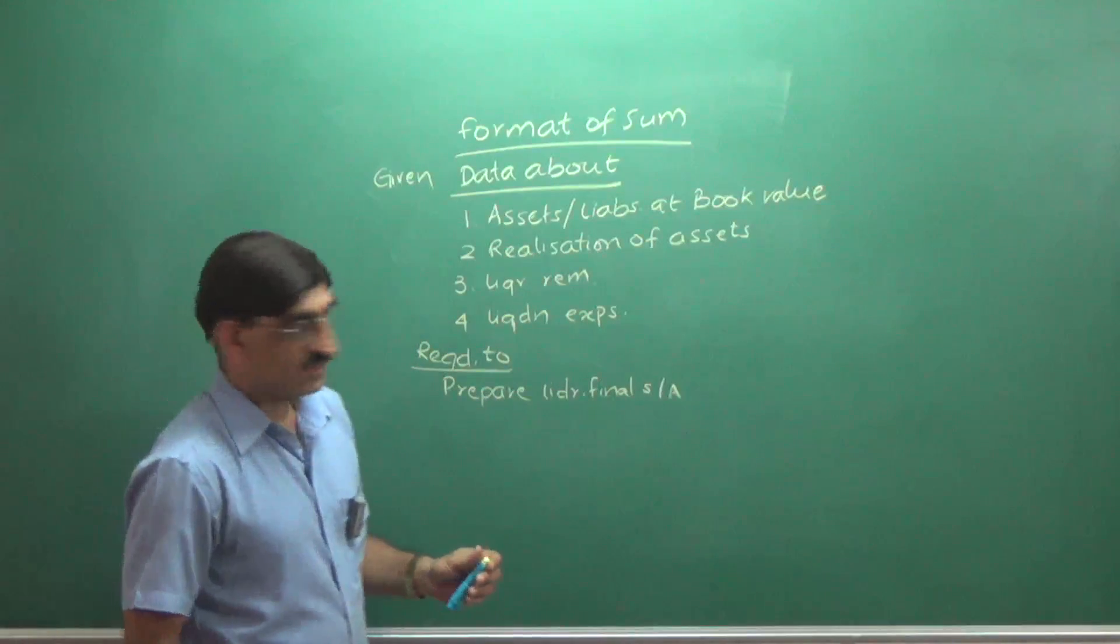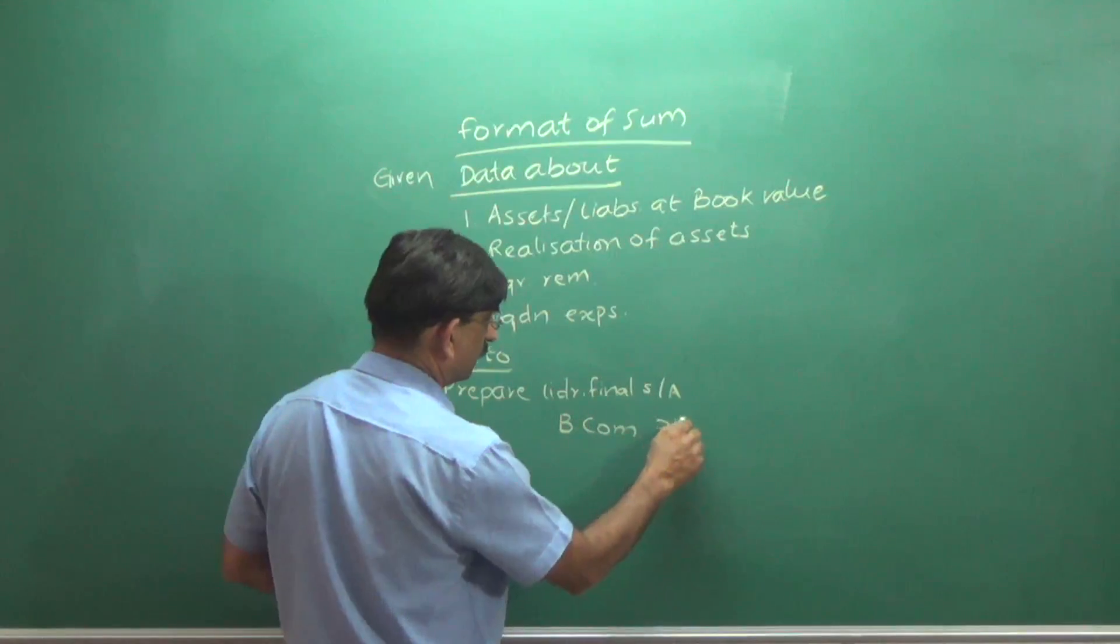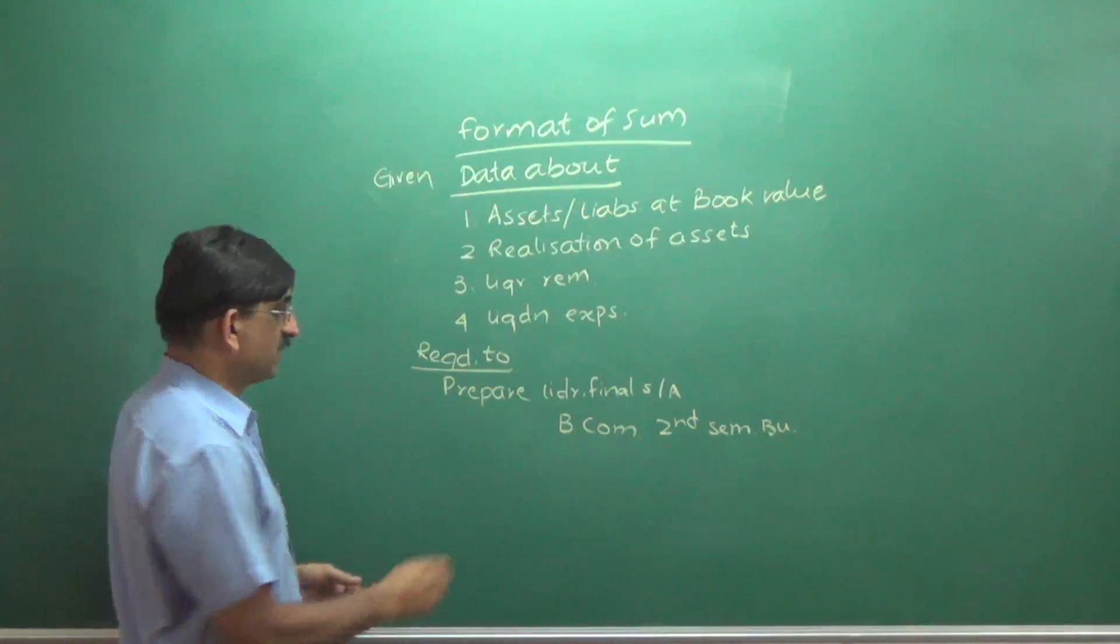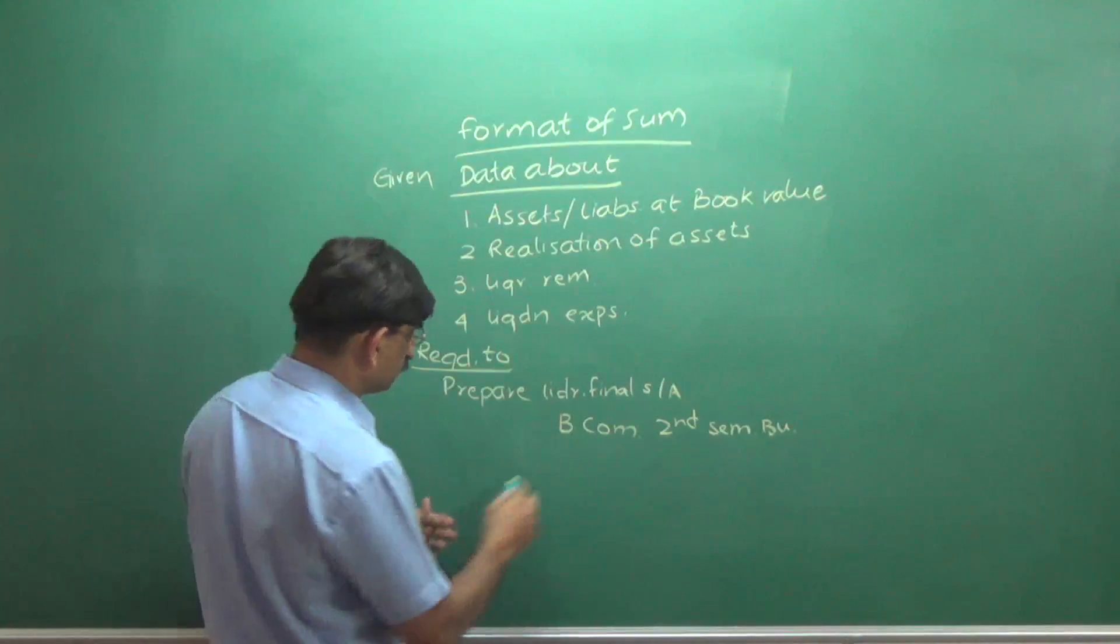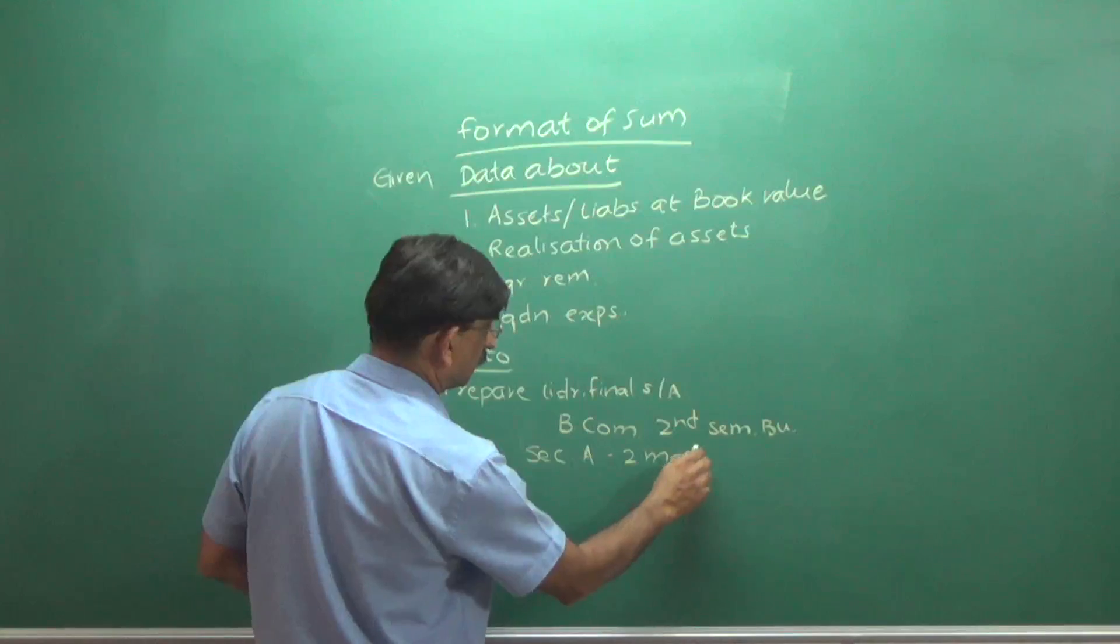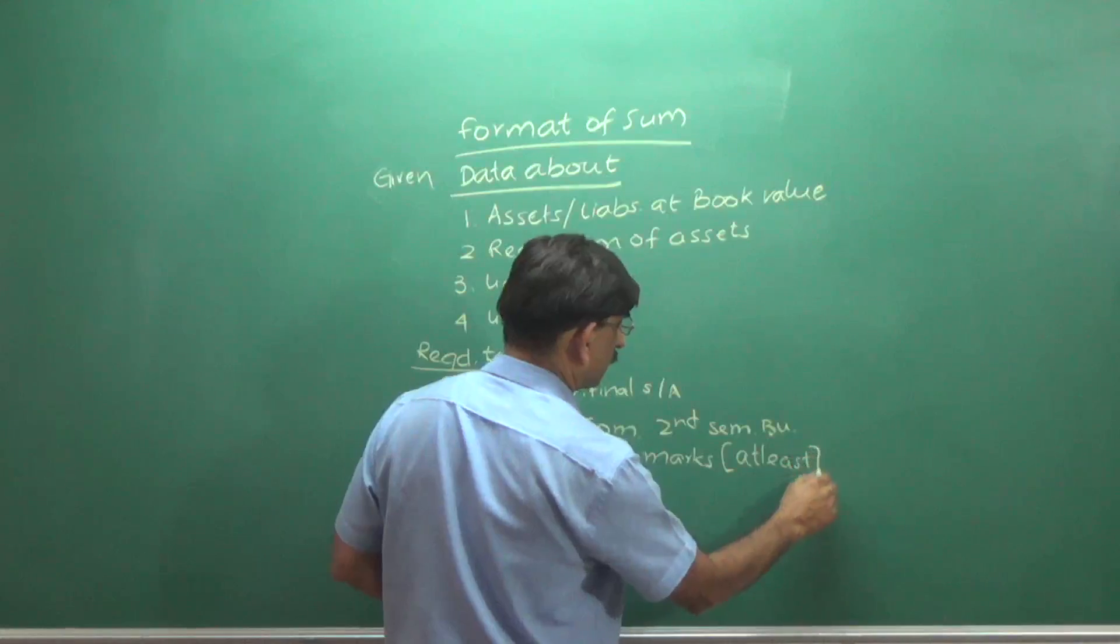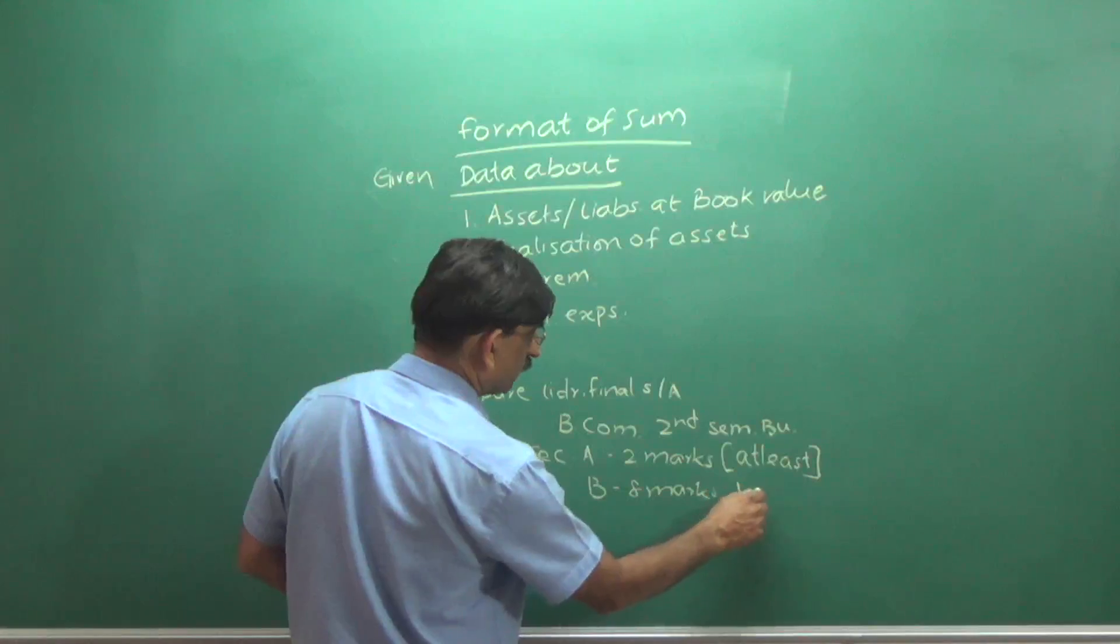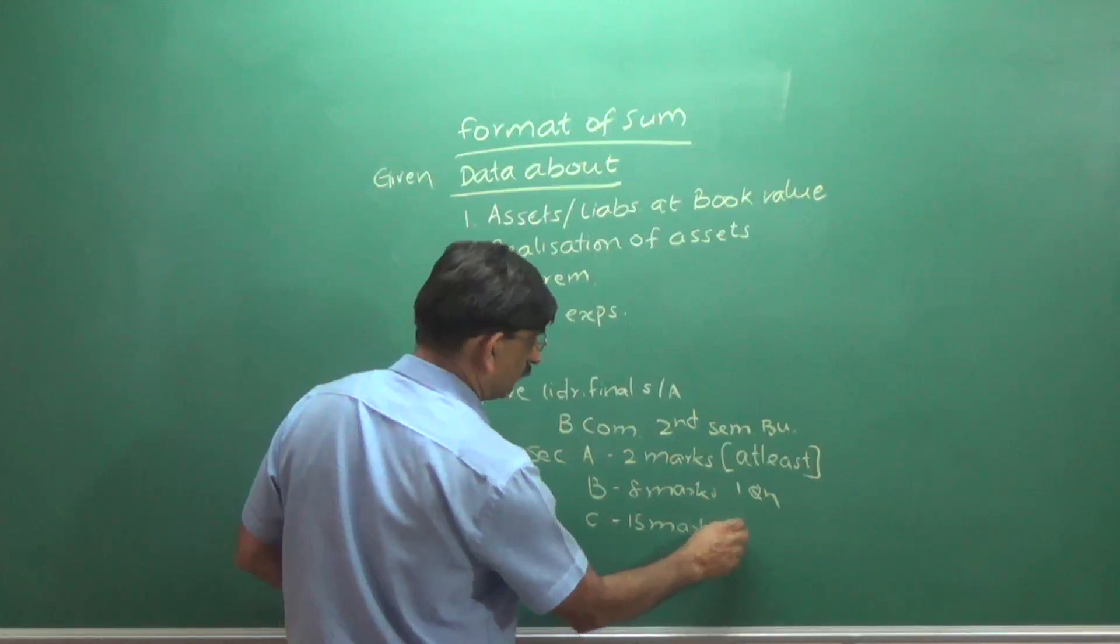This is a very important thing. In BCOM, Second SEM, Bangalore University, this question will appear in section A. That's a two-mark section. The theory part, two marks, at least one. In section B, eight marks, one question. In section C, fifteen marks, one question.